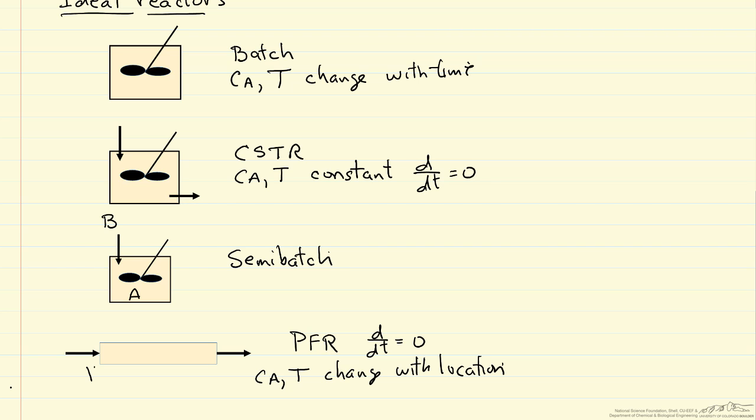If we consider this volume as our variable, as we move down the reactor, here volume is zero, here is our total volume. As we move down, CA reacts, CB reacts to form products.